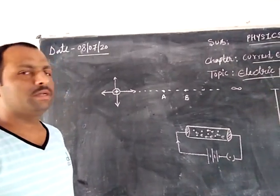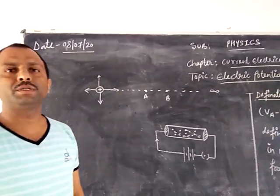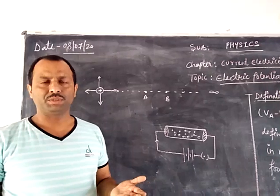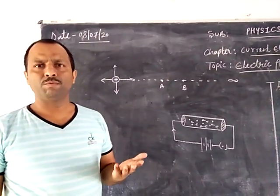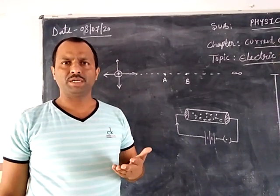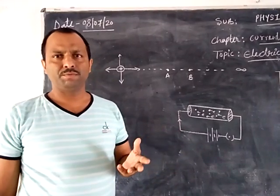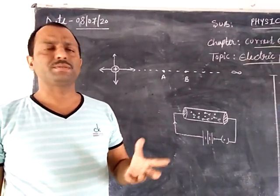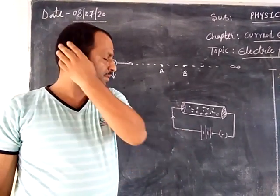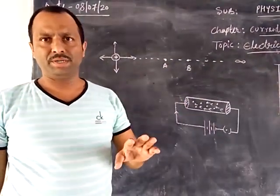Good morning students. The next phase of our topic is electric potential difference. Earlier we learned the concept of electric potential — it is the work done to bring a unit positive charge from infinity to that point. In potential difference, two points are defined, whereas in the previous concept one point was undefined (infinity) and the other point was defined.